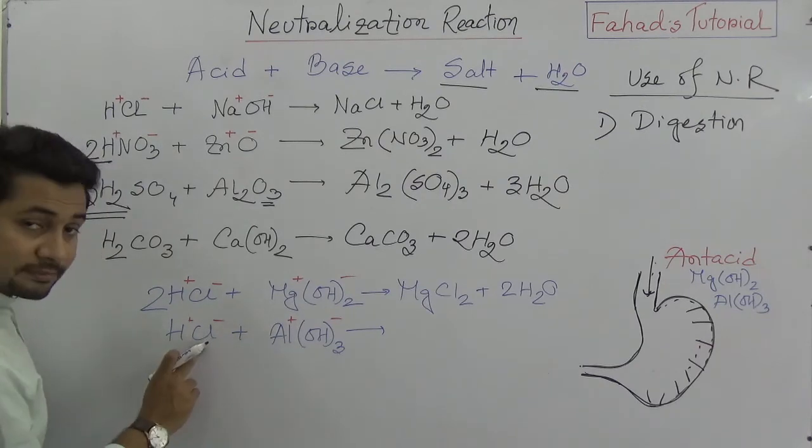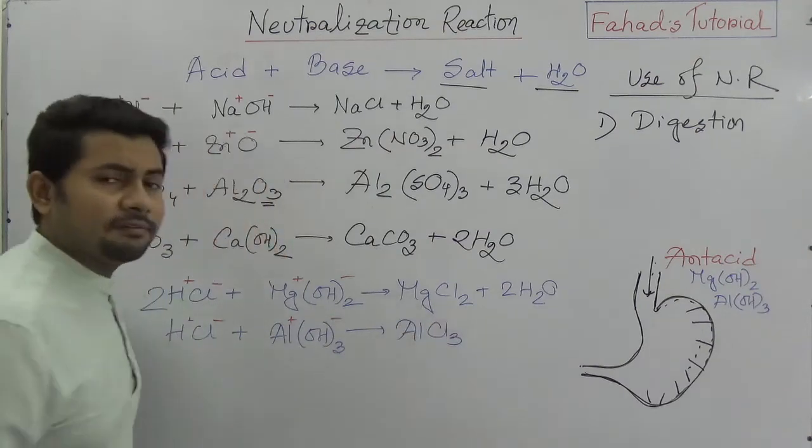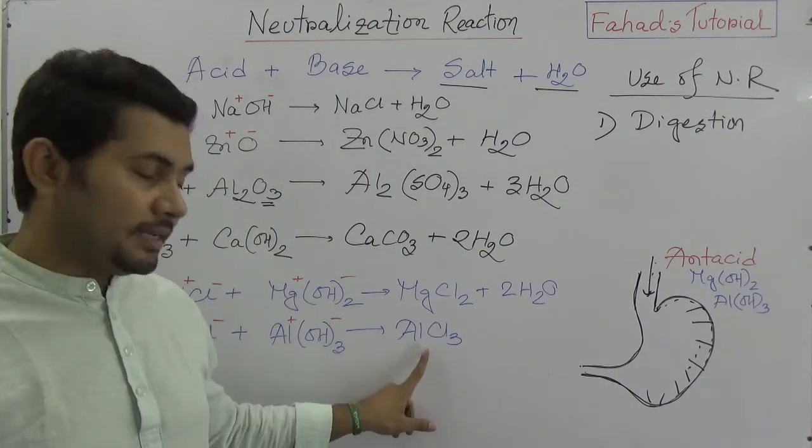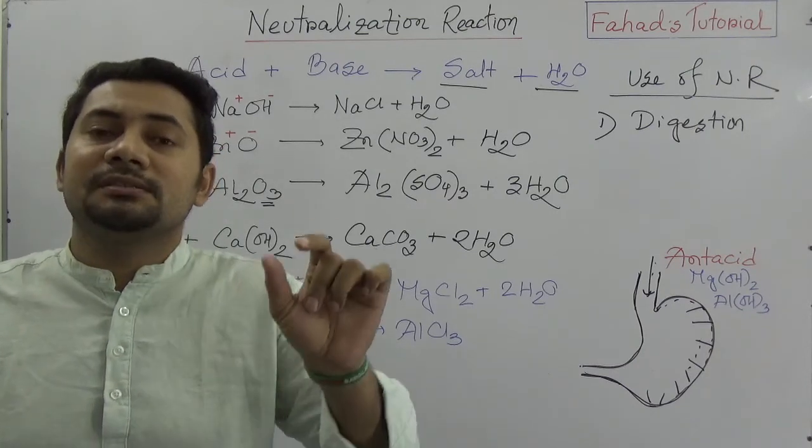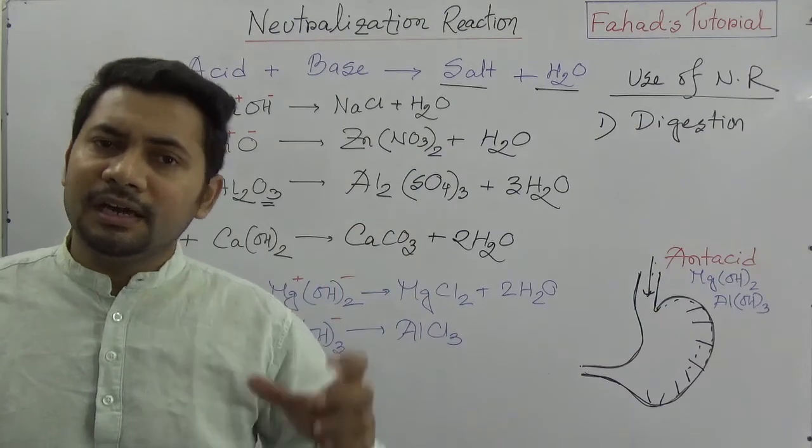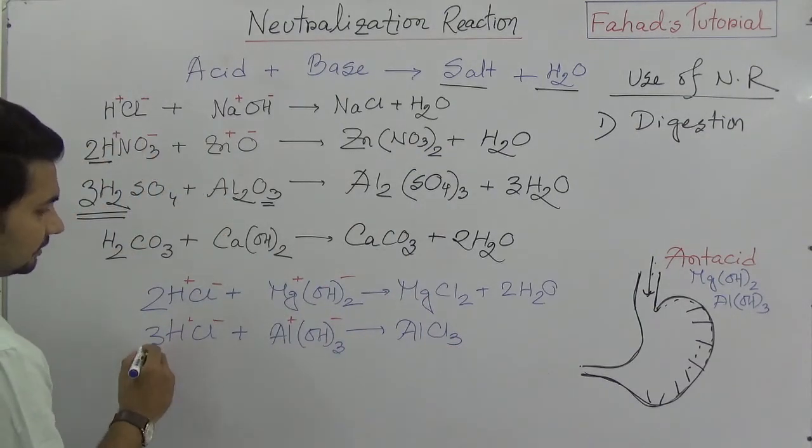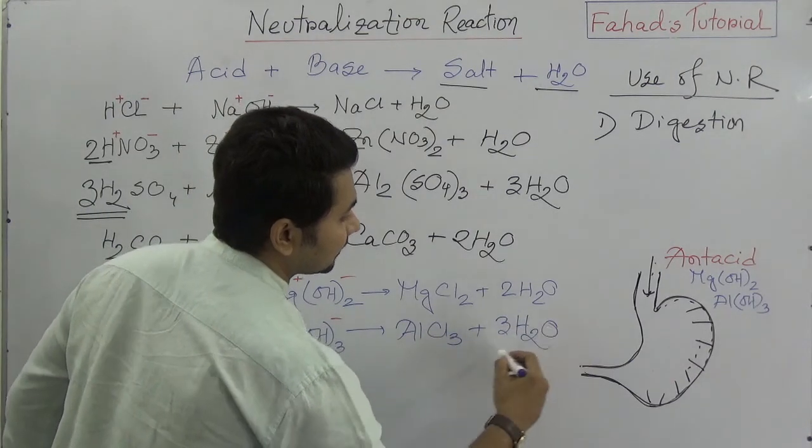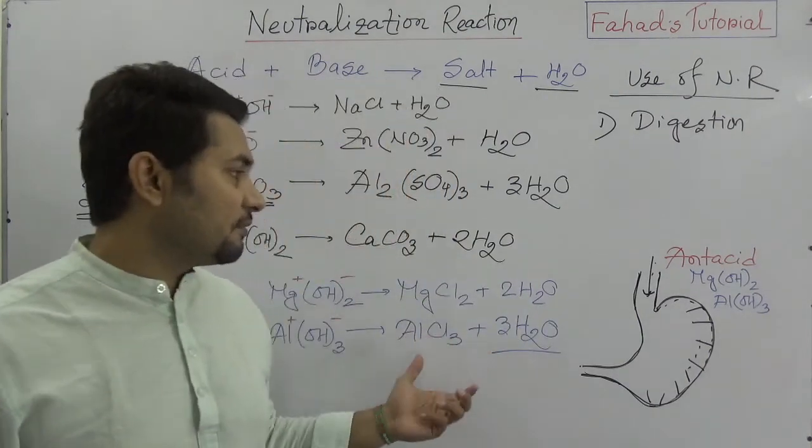Aluminum will accept chlorine and will produce aluminium chloride. Now if you have a question, why it is AlCl3? Then I request you to watch my other videos about chemical formula. So this is Cl3, so this would be 3. This would be 3 molecules of water. This is simply the example of neutralization reaction.